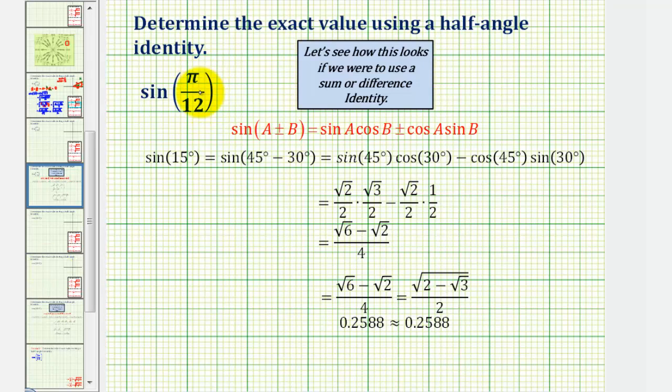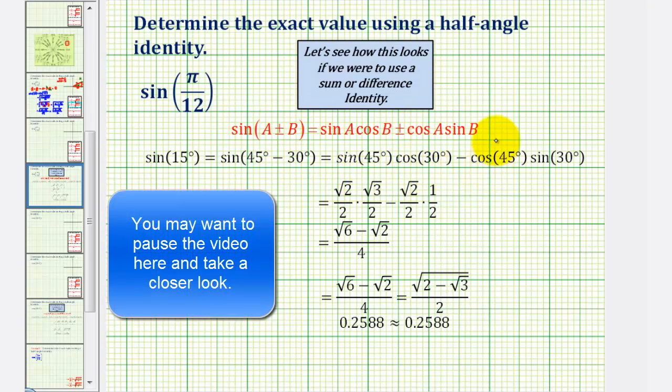Again, we know that pi over twelve radians is equal to fifteen degrees, which is also equal to forty-five degrees minus thirty degrees. So if we compare the difference identity for sine, given here in red, we'd have the difference of these two products, which if we simplify, would be the quantity square root six minus square root two divided by four.